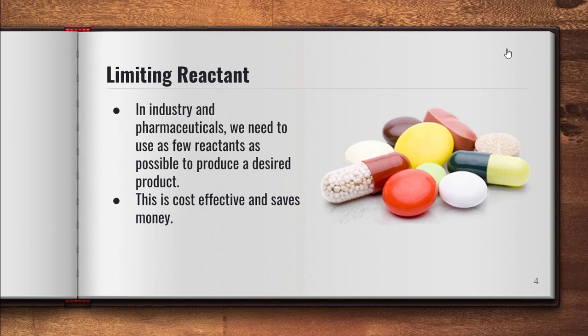I don't know if you remember from previous problems that we've done, but when we've done stoichiometry problems it's always given you this much amount of one reactant and then it says the other one's in excess. Well, the reality is putting something in excess is not very cost efficient. In industry and pharmaceuticals we try to use as little of the reactants as possible to produce a desired amount of product. It's cost effective and saves lots of money. You work out exactly how much of each reactant you need.